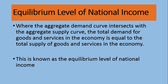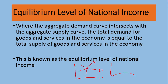Equilibrium takes place when the aggregate demand curve intersects the aggregate supply curve. Here is the aggregate demand curve — negatively sloped, sloping downwards — and the aggregate supply curve. Where they intersect, that is the equilibrium level of national income, denoted by Y. At that intersection point we also get the equilibrium price level in the country. This is how aggregate demand and aggregate supply determine national income and price level.